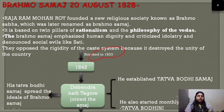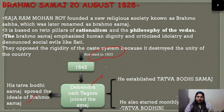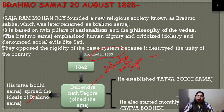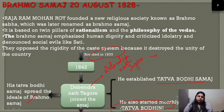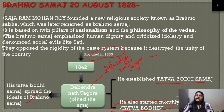Debendranath Tagore was associated with the Tattva Bodhi Society. He established the Tattva Bodhi Society and also published a monthly journal called Tattva Bodhi. He joined the Brahmo Society in 1842. Remember: when Debendranath Tagore joined in 1842, the Tattva Bodhi Society was established along with the monthly journal of the same name.